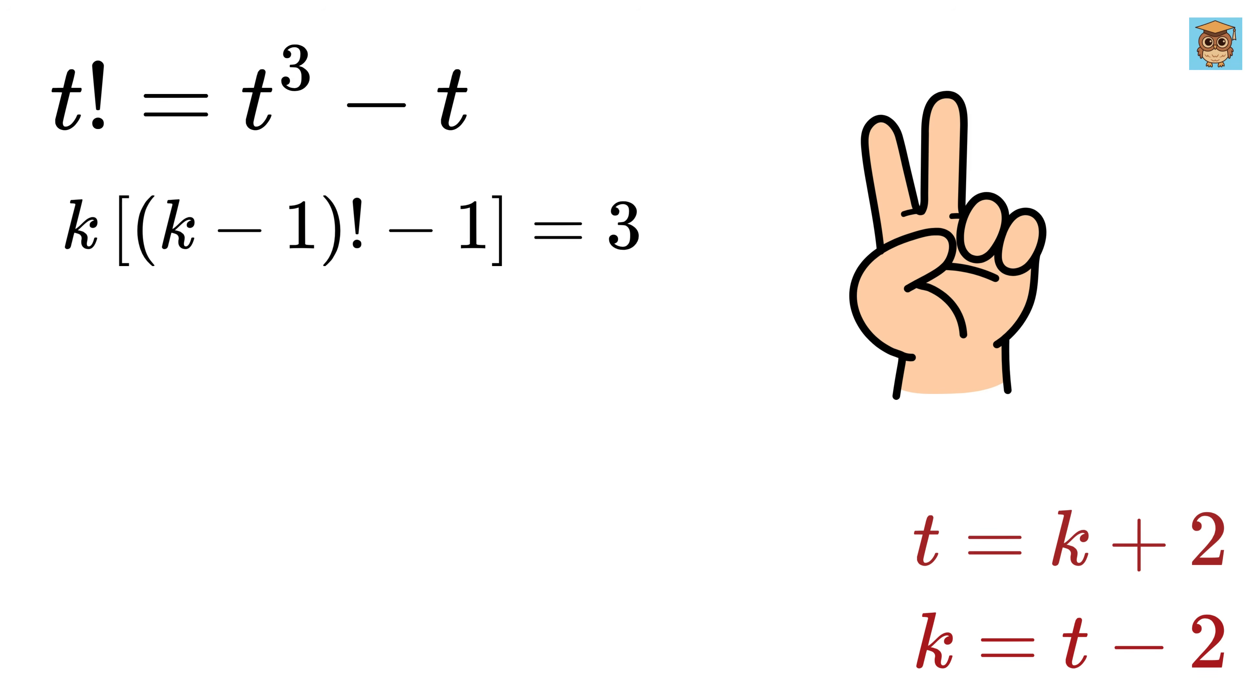Now, second possibility is that if k equals 3, and k minus 1 factorial minus 1 equals 1. This means k minus 1 factorial equals 2, which is correct, because if k is 3, then k minus 1 factorial equals 2 factorial, which is 2 times 1 or 2, and hence left side equals right-hand side. So k equals 3.